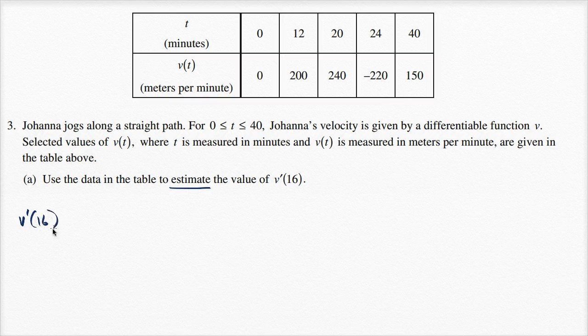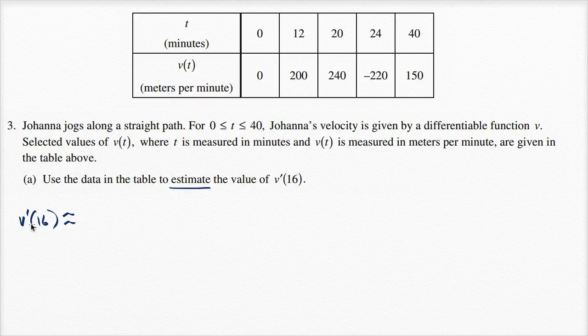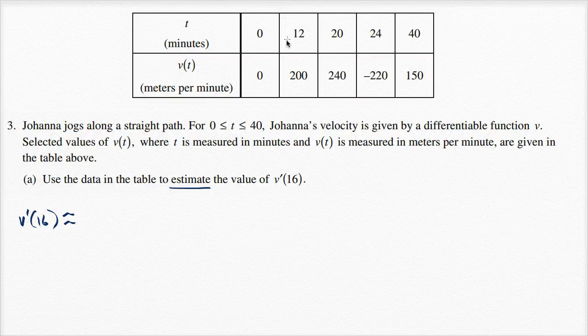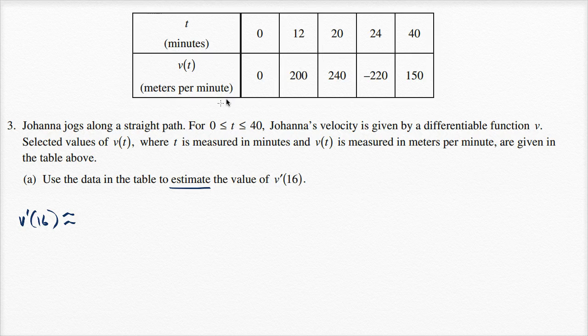We can estimate v prime of 16 by thinking about what is our change in velocity over our change in time around 16. And when we look at it over here, they don't give us v of 16, but they give us v of 12, they give us v of 20. So let's figure out our rate of change between 12, t equals 12, and t equals 20.